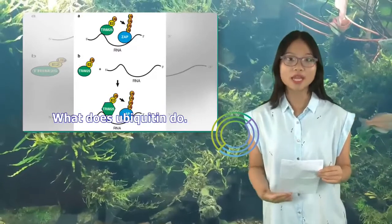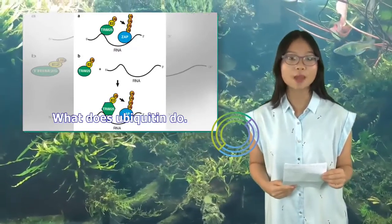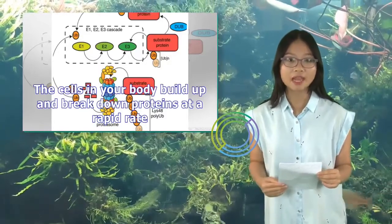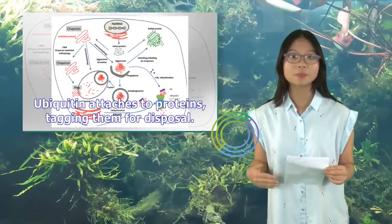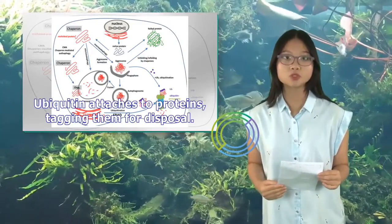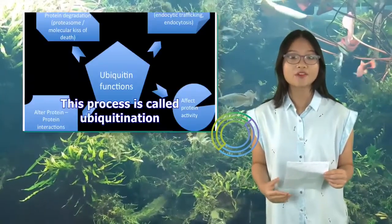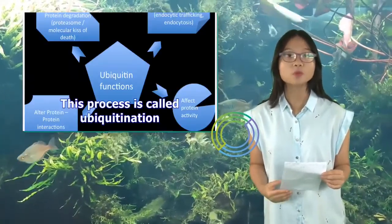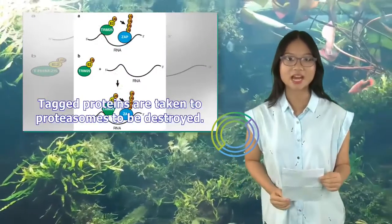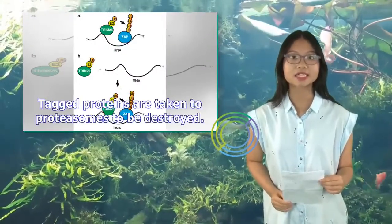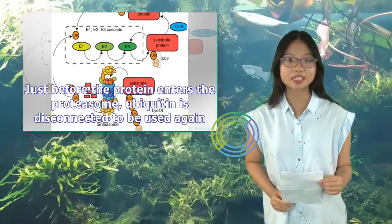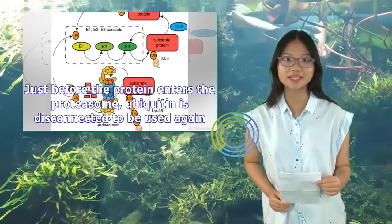What does ubiquitin do? The cells in your body build up and break down proteins at a rapid rate. Ubiquitin attaches to proteins, tagging them for disposal. This process is called ubiquitination. Tagged proteins are taken to proteasomes to be destroyed. Just before the protein enters the proteasome, ubiquitin is disconnected to be used again.